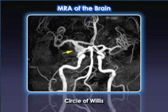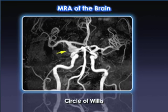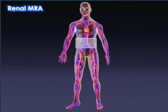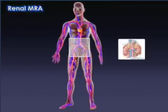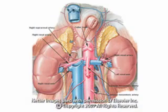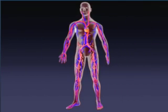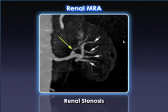Here is an MRA of the circle of Willis demonstrating a large aneurysm of the right internal carotid artery. Renal MRA is fast, accurate, and reliable. Shown here is a CE MRA of a patient with renal stenosis. Notice the excellent detail of the renal arteries and segmental arteries as they enter the kidney.